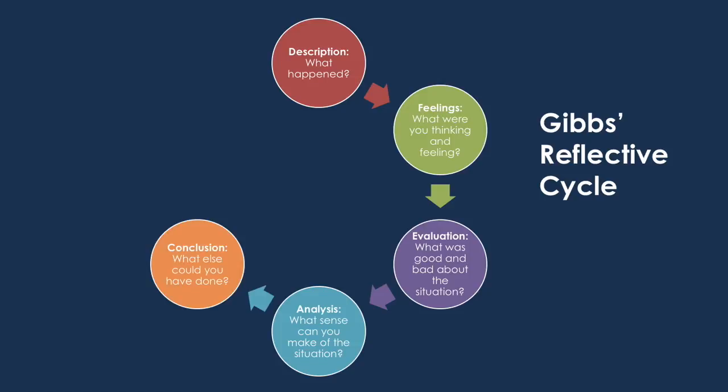Step 5: Make conclusions — what did you learn from your experience? What other actions could you have taken? Step 6: Develop an action plan — in similar situations in the future, what will you do? This is the part of the learning cycle that facilitates continued growth and improvement. Rather than simply repeating experiences over and over, you are equipped to make thoughtful and positive changes.